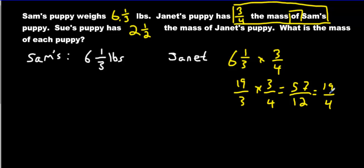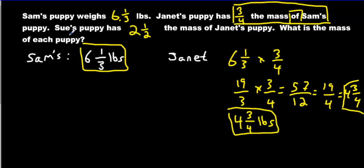Now turn this back into a mixed fraction. That's going to be 4, 8, 12, 16. Okay, 4 times. And then 17, 18, 19. We have 3 left over out of 4. And this, my friends, is going to be Janet's puppy. It's going to weigh 4 and 3 quarter pounds. What else do we have? So we have Janet. We have Sam. We just have one more to go. We have Sue.